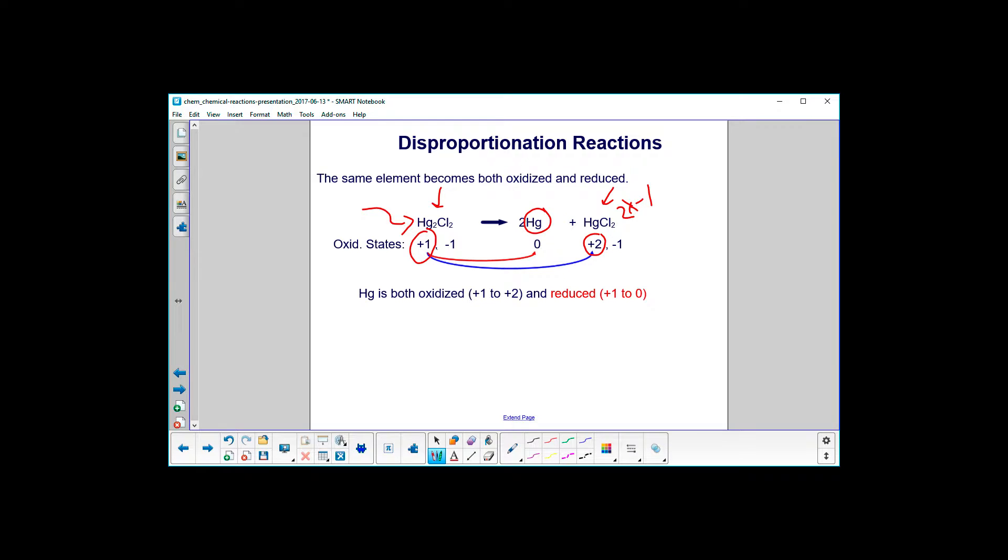So mercury is both oxidized, it went from plus one to plus two, and also reduced where it went from plus one to zero, so that's a disproportionation reaction.